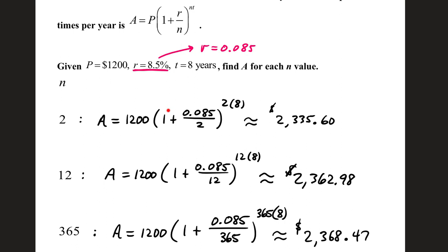In your calculator, be very careful: type in 1200, open parenthesis, 1 plus 0.085 divided by 2, close parenthesis, hit your exponent button, and either type in 16 or in parenthesis 2 times 8. You should get an ending value of $2,335.60.